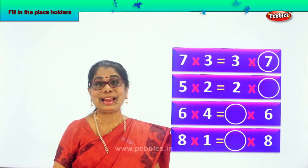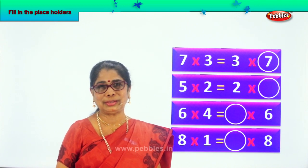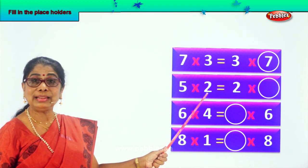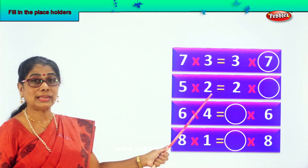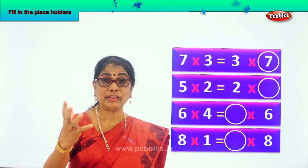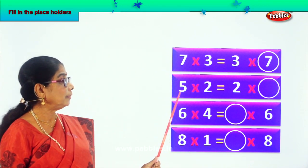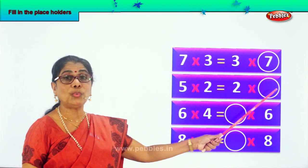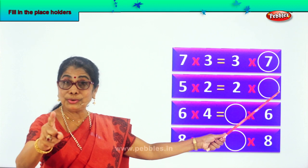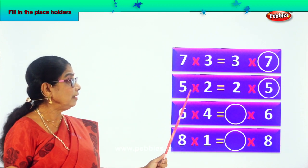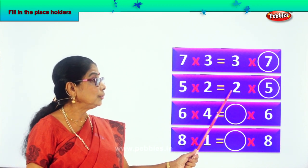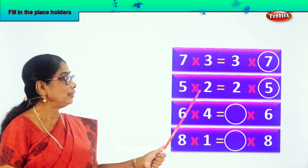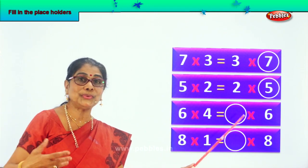It's a very interesting filling up of placeholders. Look at this. 5 into 2 — what are 5 twos? 10. Very good. 5 twos are 10. This side also you have to get 10 as the answer. 5 twos are 10, equal to 2 into what will give you 10? 5. So 5 twos are 10 and 2 fives are 10. We have reversed. 5 into 2 is equal to 2 into 5.